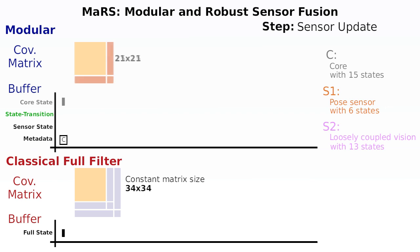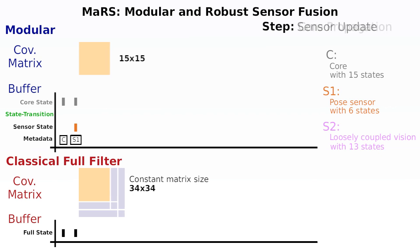The next step introduces a measurement of Sensor 1. This requires the latest core state from the buffer for the initialization of the additional states of Sensor 1. The core and sensor states are stored in the buffer after the update. Since all states of the classical approach have been initialized during the first step, the introduction of a measurement by Sensor 1 produces an update which corrects all states and updates the complete 34 by 34 covariance matrix, which requires more computational performance because the size of the covariance matrix is higher.